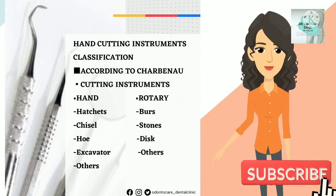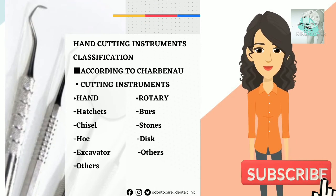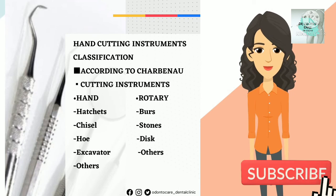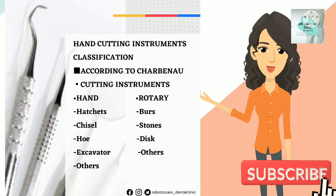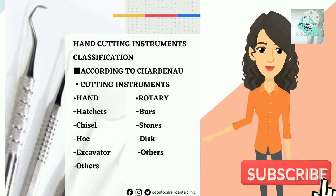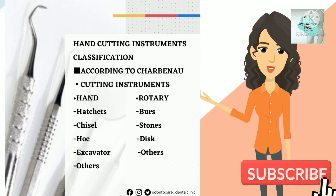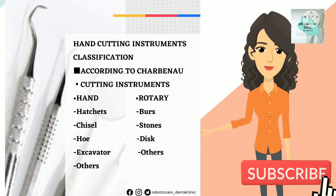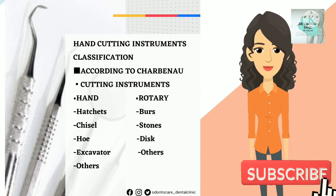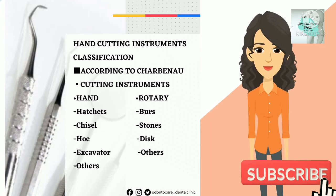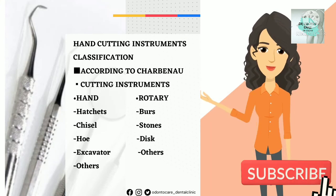Let's see the classification of hand instruments according to Chabino. Cutting instruments involve both hand and rotary instruments. Under hand instruments: hatchet, chisel, hoe, excavator, and others. Under rotary instruments: burs, stones, discs, and others.